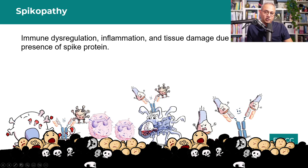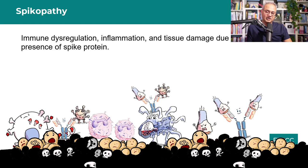This antigen-antibody complex deposition is called type 3 hypersensitivity reaction — really bad. When these complexes deposit in tissue, complement activation occurs, macrophages become active, inflammatory mediators are released causing local damage and bringing in more cells. If this is endothelium, the endothelium is in serious trouble.